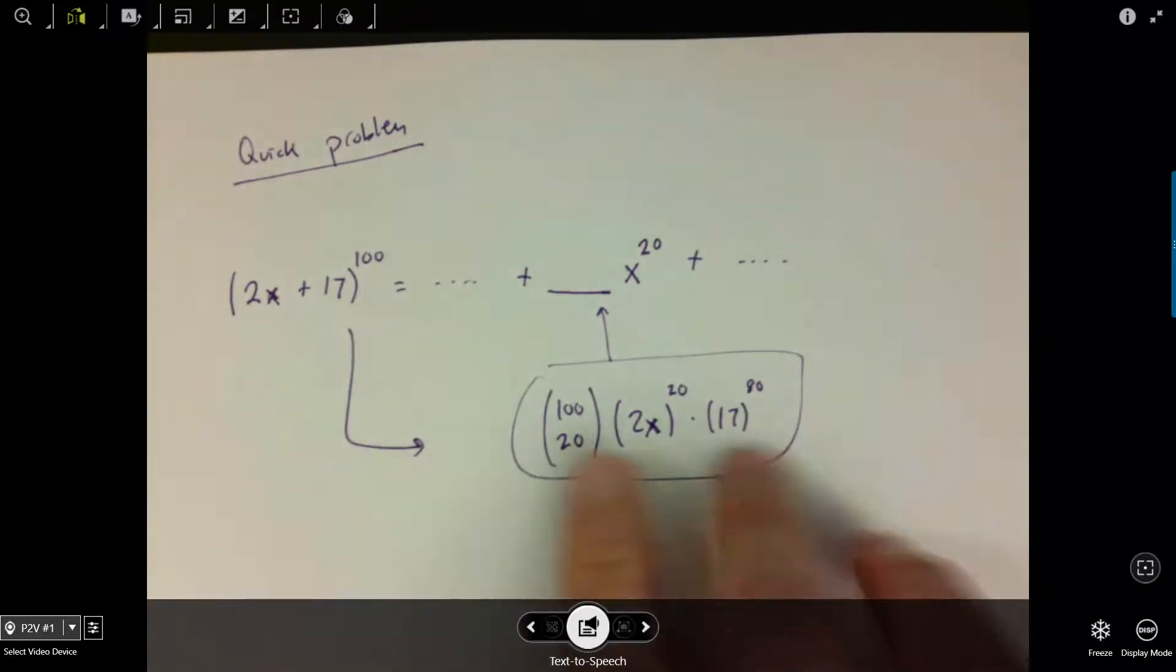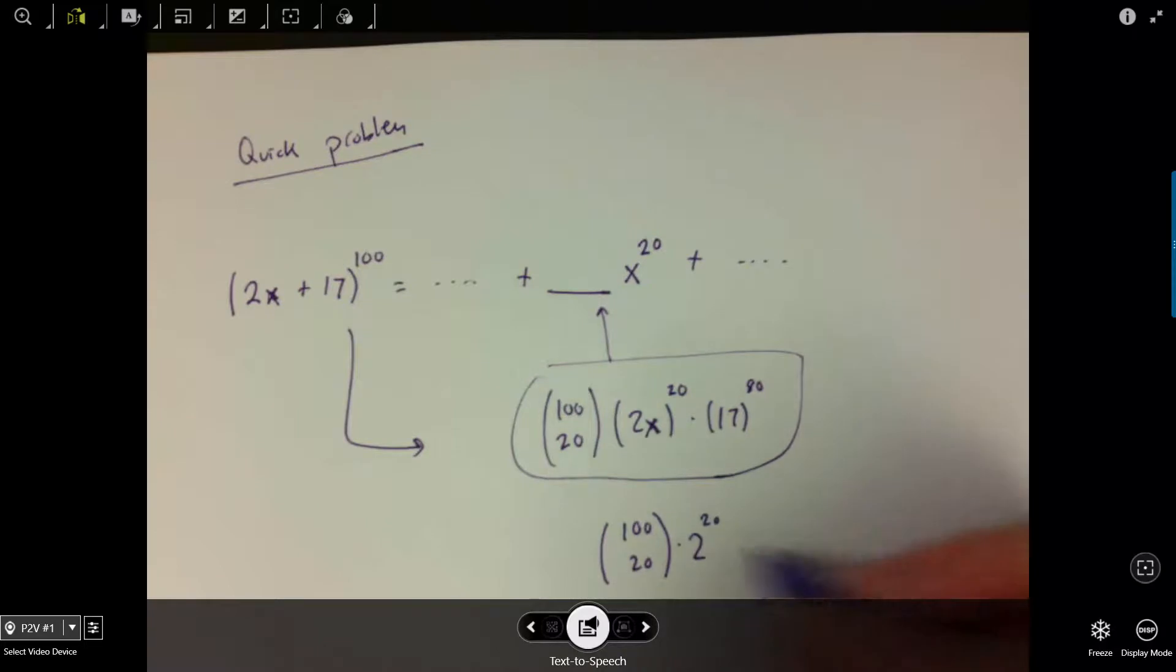So if I'm going to collect together all the things that are strictly numerical, I've got 100 choose 20, which is a number, and then I've got 2 to the 20th power, which is a number, and I've got 17 to the 80th power, which is another number.